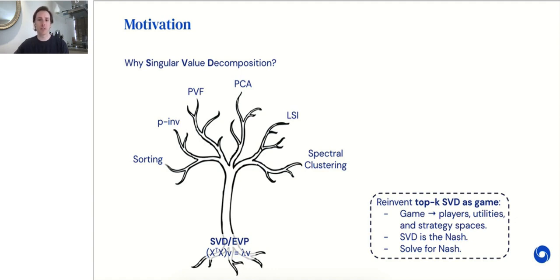In order to do so, we needed to define players, their utilities, and their strategy spaces. Next, we needed to prove that the TOP-K SVD is the Nash equilibrium of the game. And finally, we needed to design a distributed algorithm to solve for the Nash.